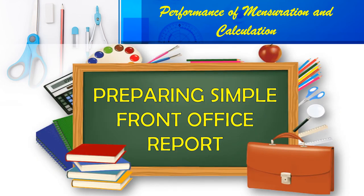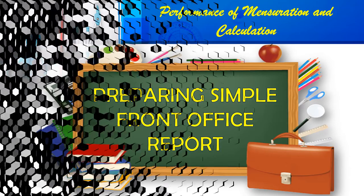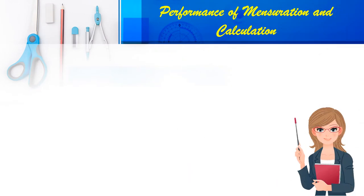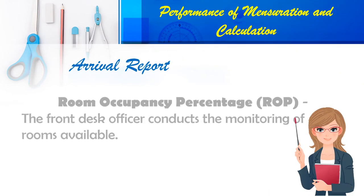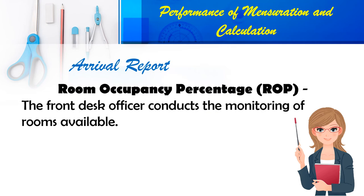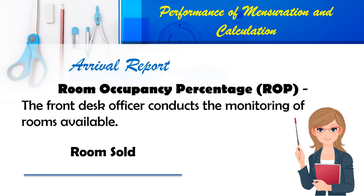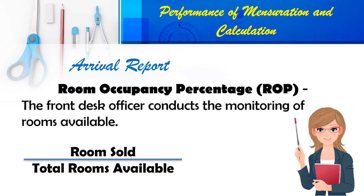Next is preparing simple front office reports. First is the arrival report, where we get the Room Occupancy Percentage (ROP). The ROP is used by the front desk officer to monitor rooms available. The formula is: rooms sold divided by total rooms available, times 100, equals ROP.